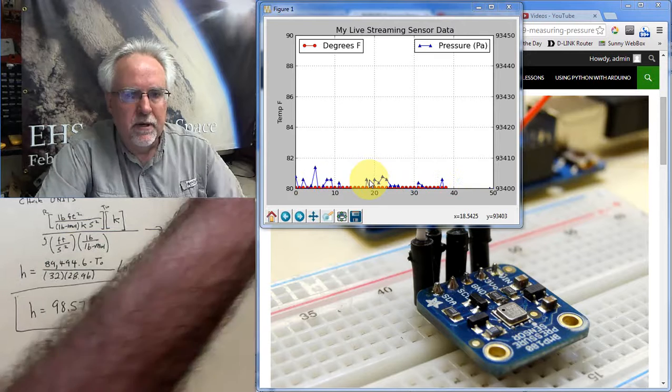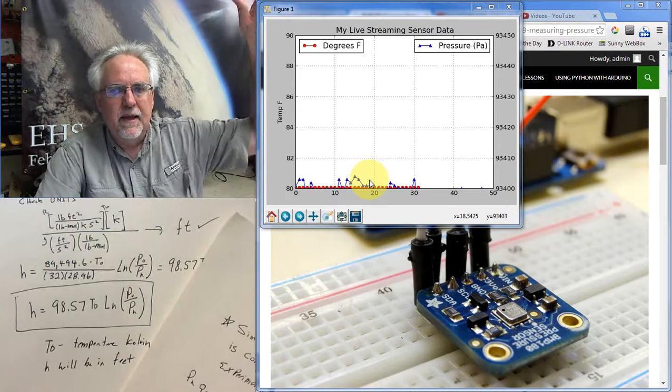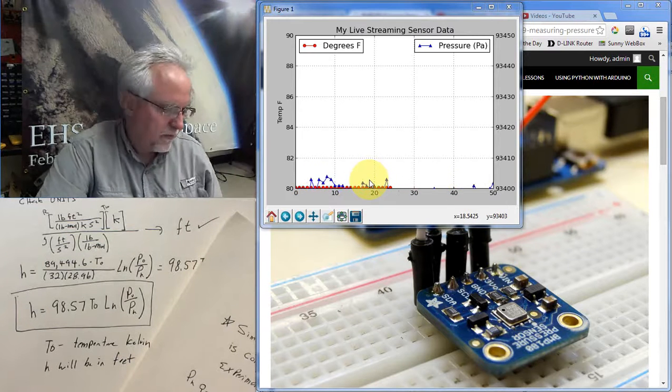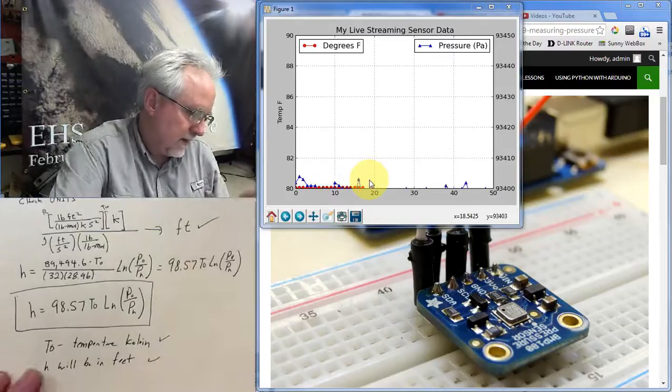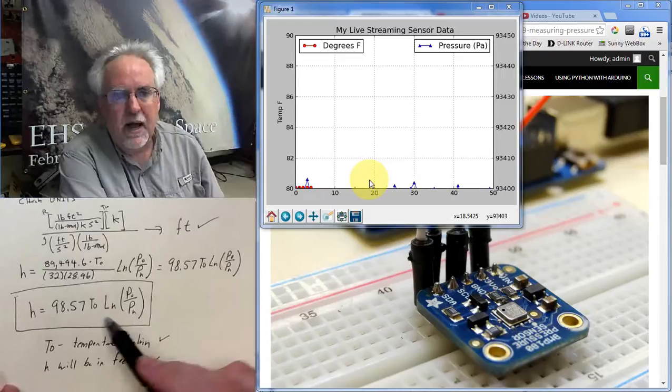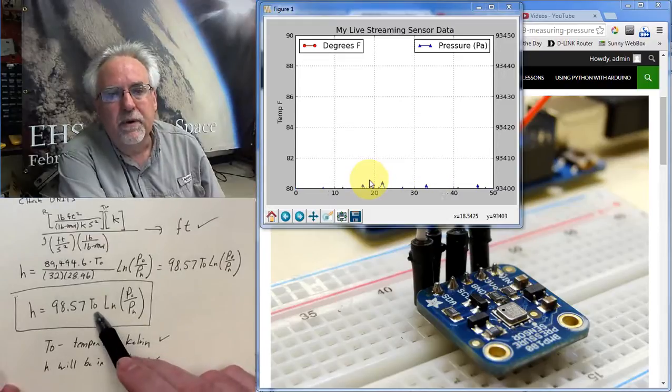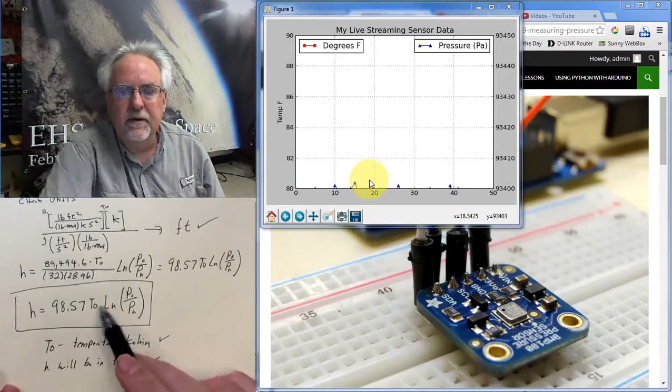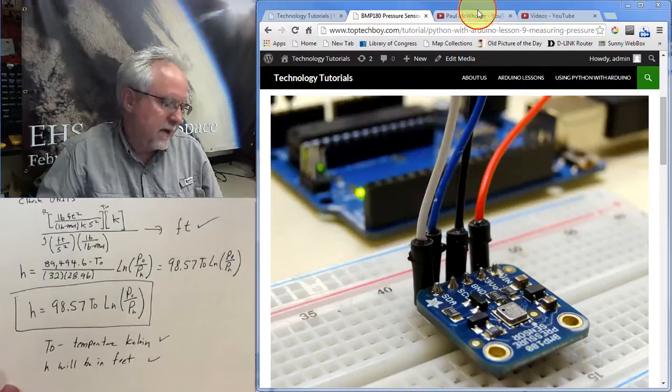So I measure a pressure at height, and I measure a pressure on the ground. And I divide the pressure on the ground by the pressure at the height, multiply by the temperature. Very important. The temperature has to be in Kelvin. The temperature has to be in Kelvin.